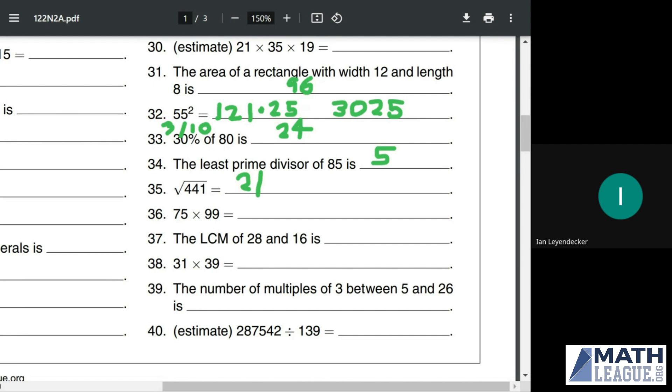75 times 99, first we can find it's 75 times 100, which is 7,500, and then we can just subtract 75 for a final answer of 7,425.